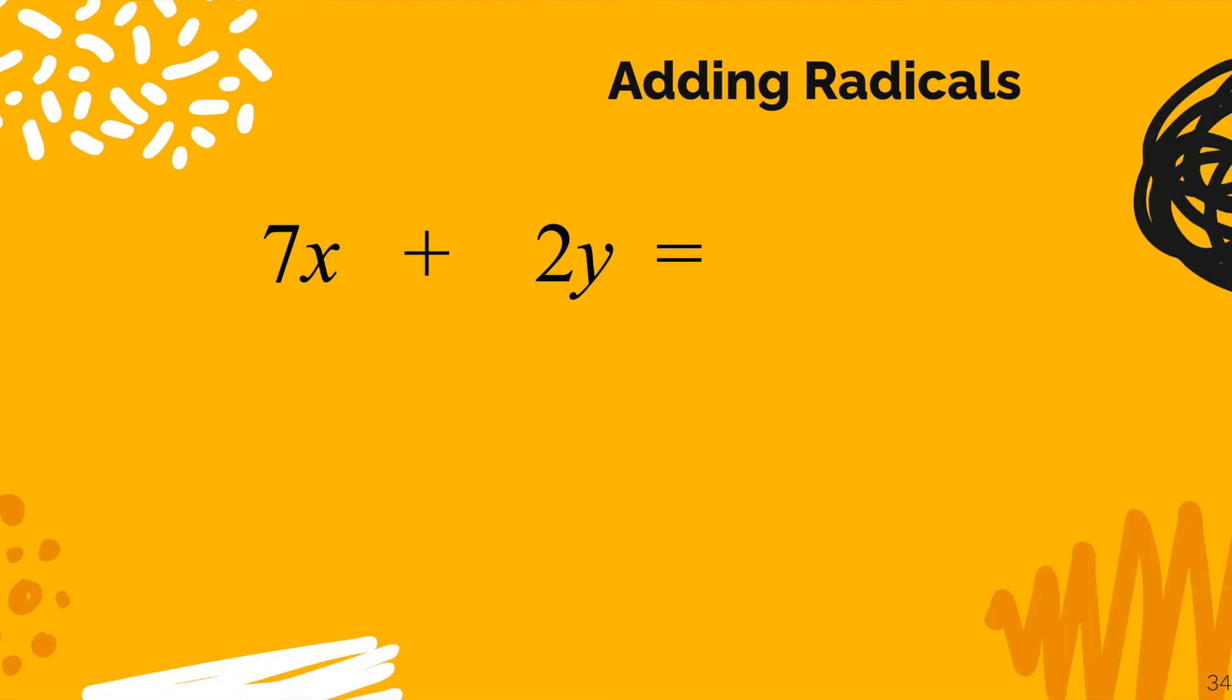Take a look at the screen now. We've got 7x plus 2y. Now, these are not like terms. So what can we do with it? Absolutely nothing. This is already simplified. So it was a trick question.